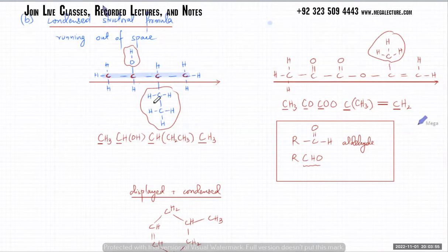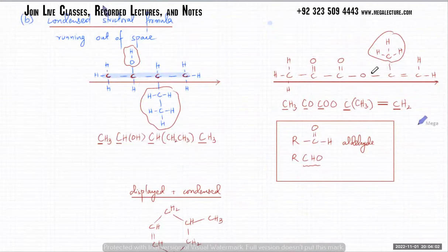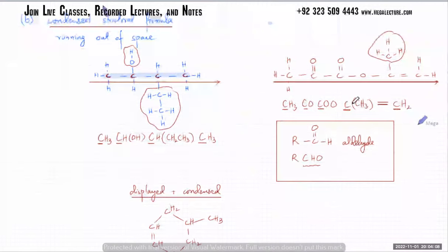CH3, with branches in brackets — CH3, then CO, CO, O, C with a bracket in CH3, and then there's a double bond and CH2. That's written in one line. So we did condensed formulas — is that clear?